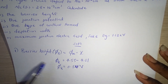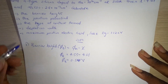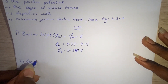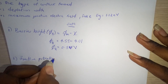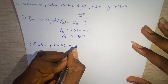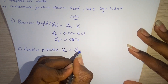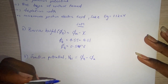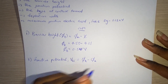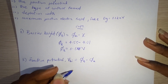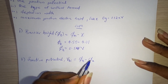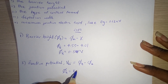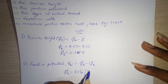That's the value for the barrier height. Now, part ii asks us to find the junction potential. The junction potential, which is VBI, is equal to φB minus φn, where φB is the barrier height found earlier, and φn is the Fermi potential — in some cases it could be represented as QVn. Now we need to find φn since we are not given it in the question. The Fermi potential φn is equal to kT times ln(Nc/Nd).